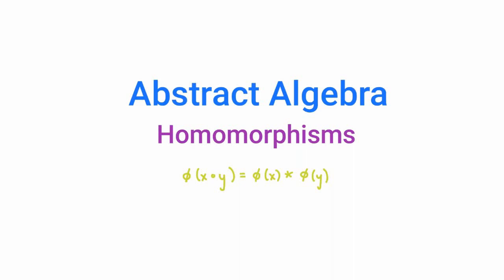In this video, we're going to start talking about homomorphisms. If you remember back to our very first video in this series called 'What is Abstract Algebra,' abstract algebra is: number one, the study of sets with algebraic structures satisfying certain properties, for example groups; and number two, maps between these sets which respect this algebraic structure. These maps are called homomorphisms, and in this video we're going to talk about homomorphisms of groups.